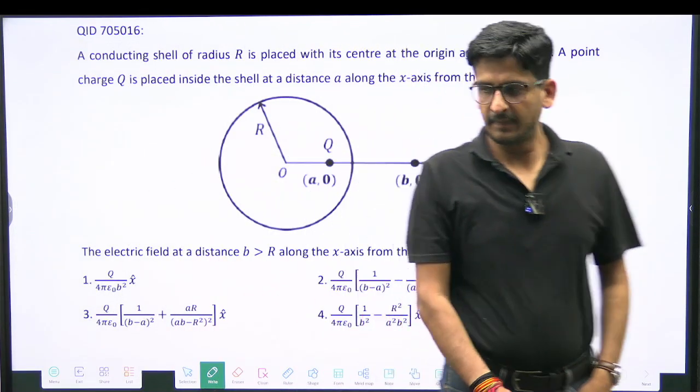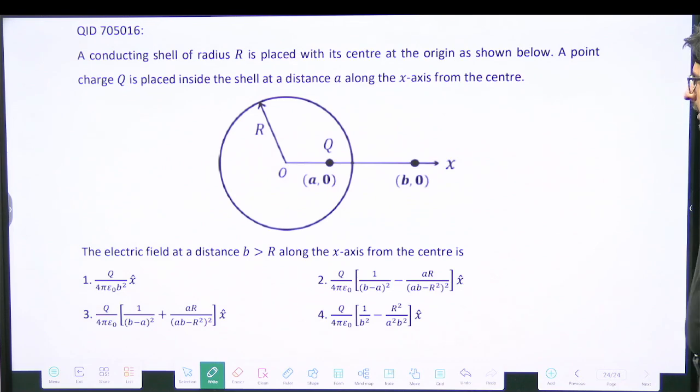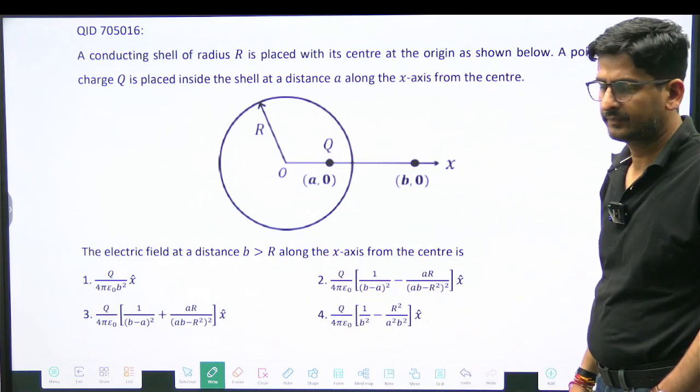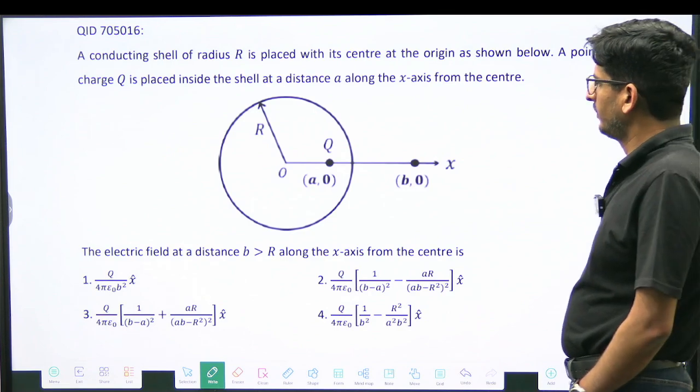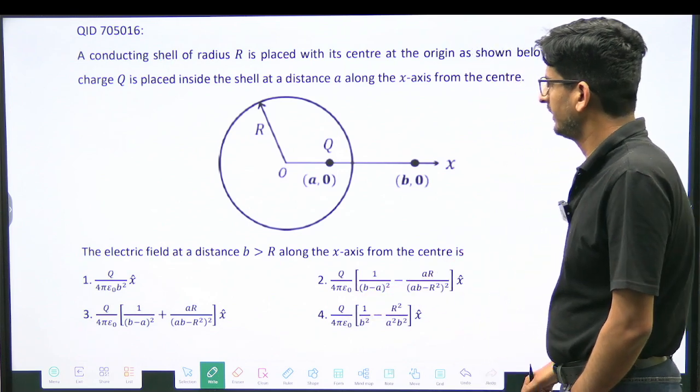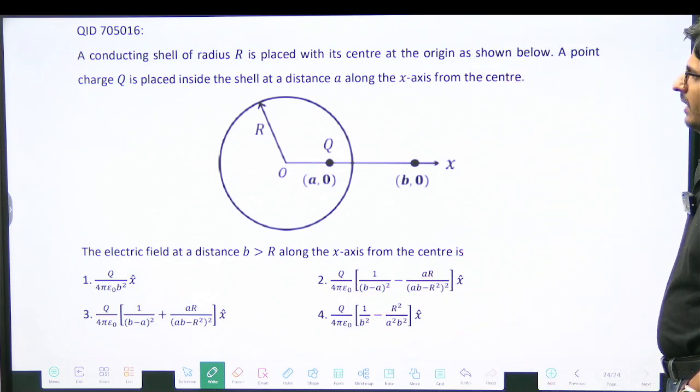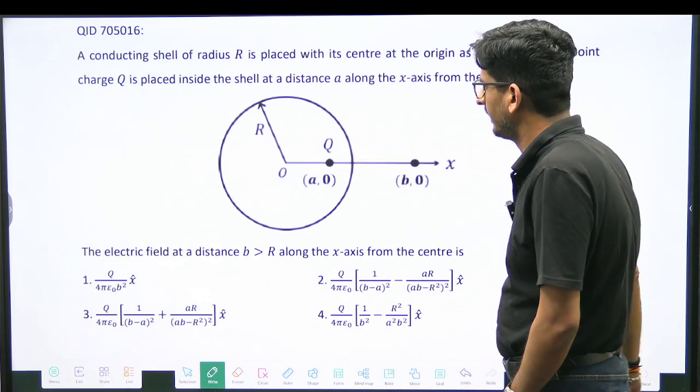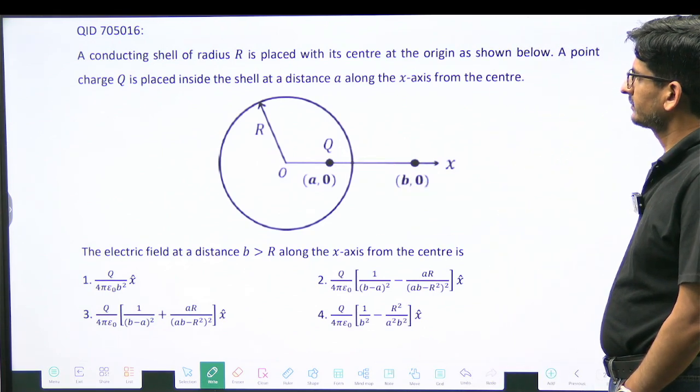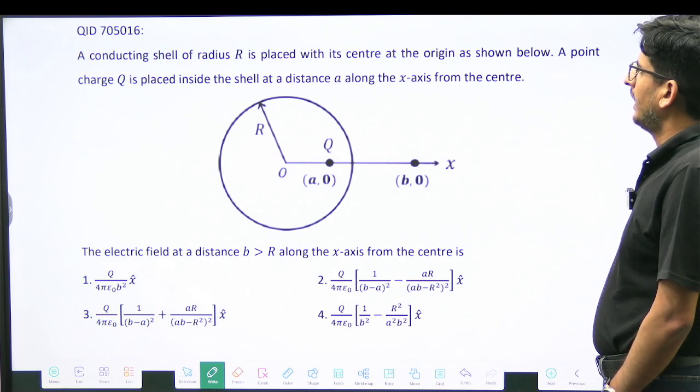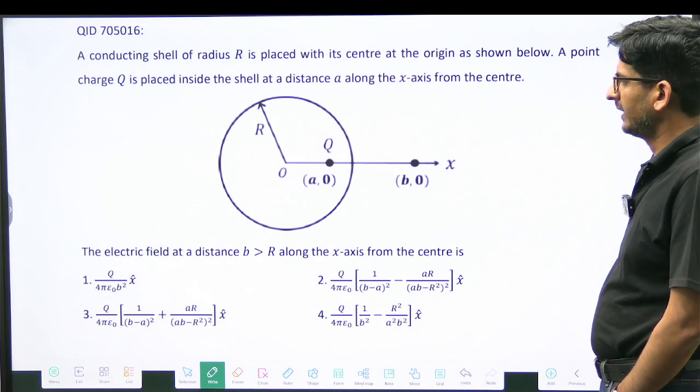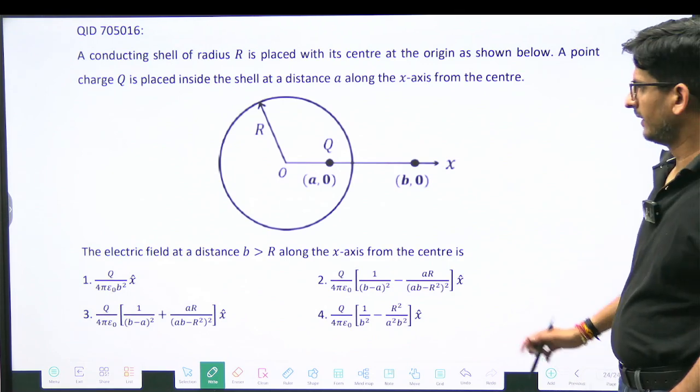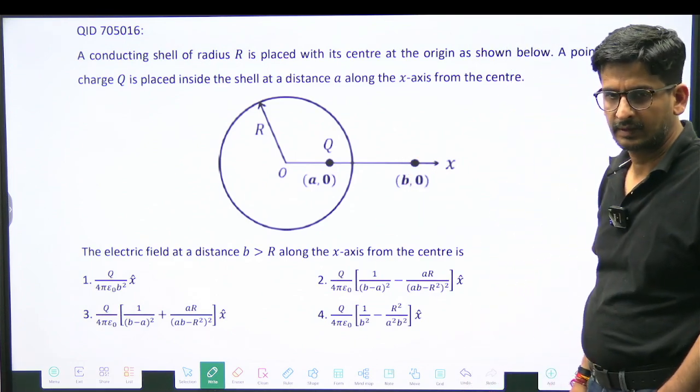See this question: there is a conducting shell of radius R and it is placed with its center at the origin. A point charge q is placed inside the shell at a distance a along the x-axis from the center. The electric field at a distance B, where B is greater than R along the x-axis from the center is what we need to find.